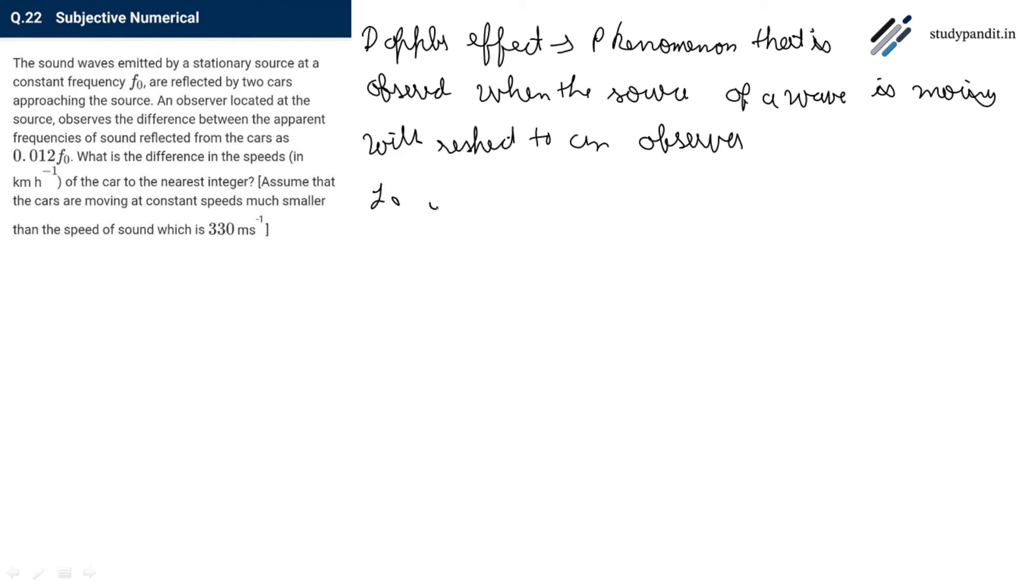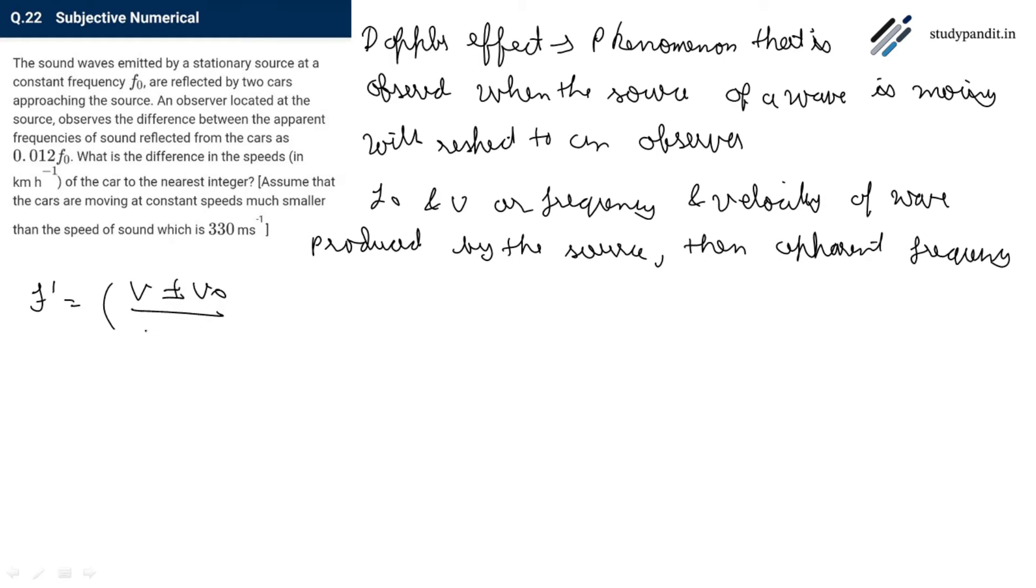If F0 and V are frequency and velocity of wave produced by the source, then apparent frequency is given by F dash equals to V plus minus V0 by V plus minus Vs into F0.